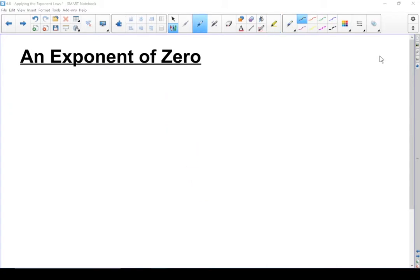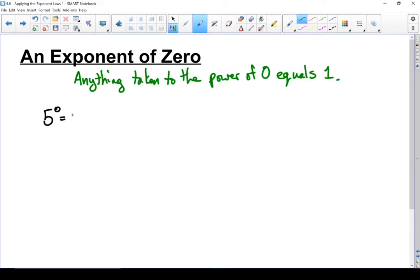So what happens if you're taking something to the power of 0? It's really not that complicated. Anything to the power of 0 equals 1. What do I mean? 5 to the power of 0 equals 1. 7 to the power of 0 equals 1. 245 to the power of 0 equals 1.